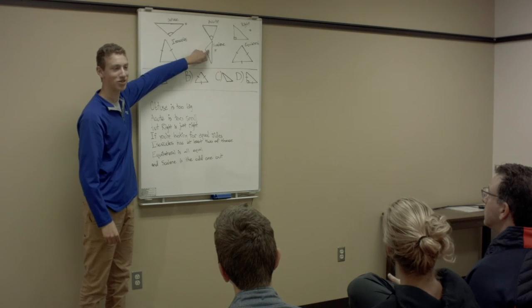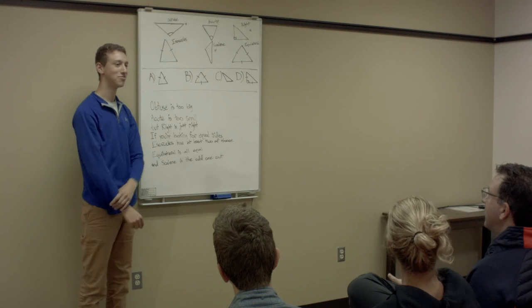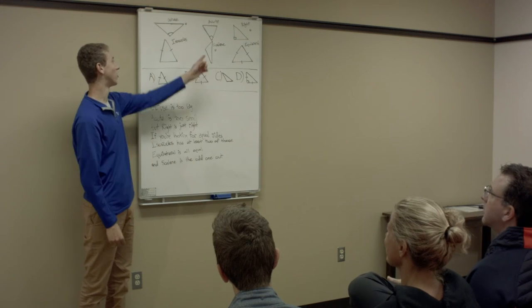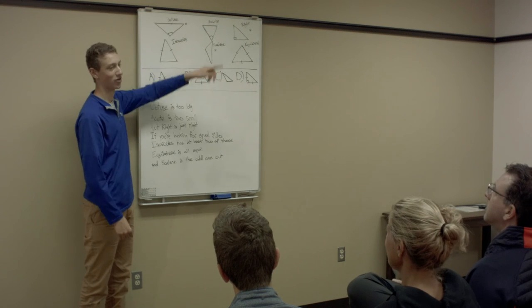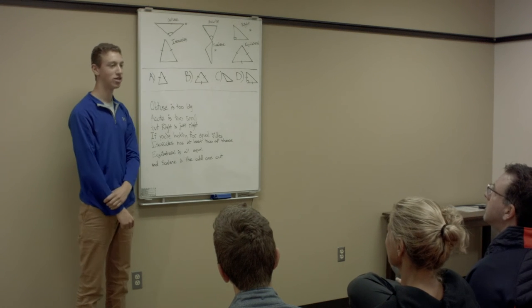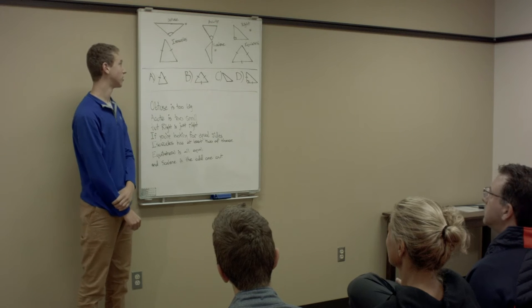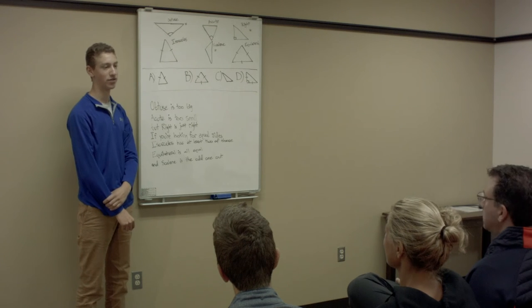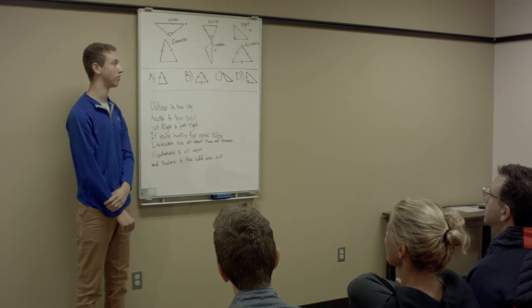What do you notice about the hash marks on this triangle? I don't see any hash marks. That's right — there are no hash marks on this triangle and that's because none of the sides are equal lengths. So this is a scalene triangle. It has no sides of equal length.